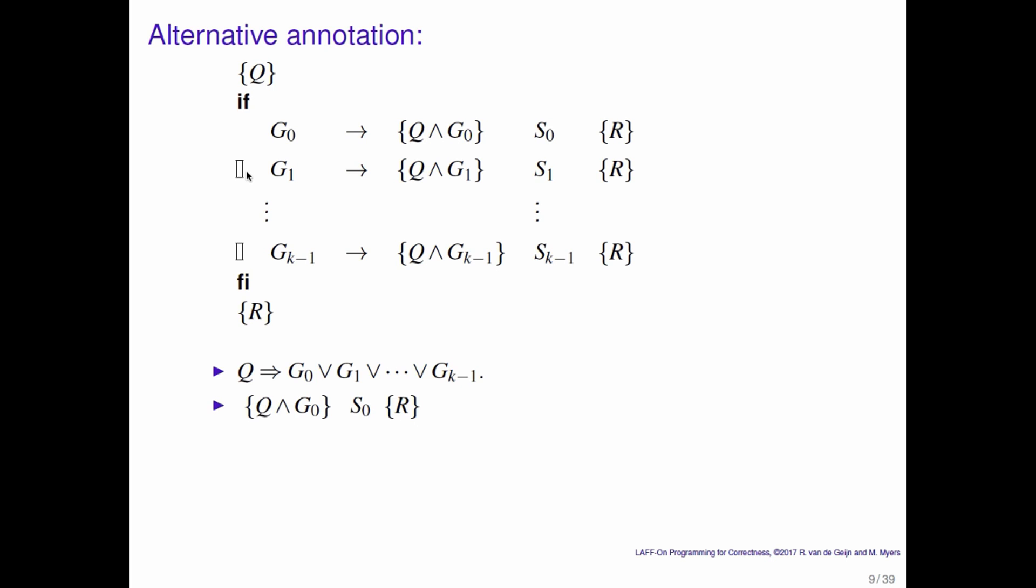The Hoare triple itself holds if and only if Q and G0 implies the weakest precondition of S0 leaving you in a state where R is true. So each of the individual Hoare triples we can check by checking whether this implication holds.